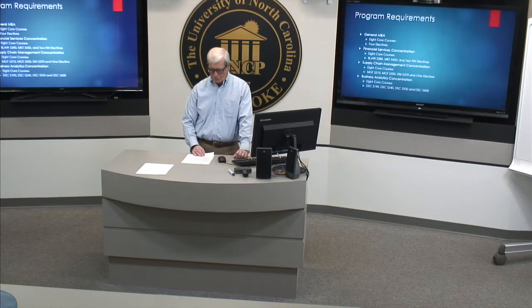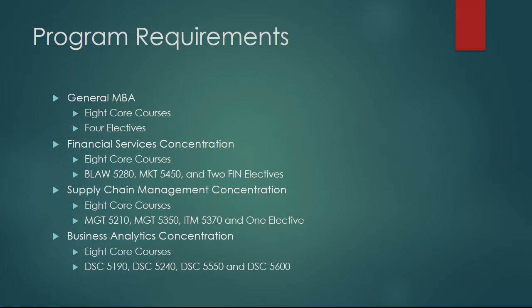Let's start with a review of the program. You'll be required to take eight core courses and four electives. If you're in a concentration, your electives are prescribed by the concentration — I guess that means they're no longer electives. All students will earn the degree by completing 36 credit hours. This slide shows the general MBA and all three concentrations and the classes required in the concentrations.